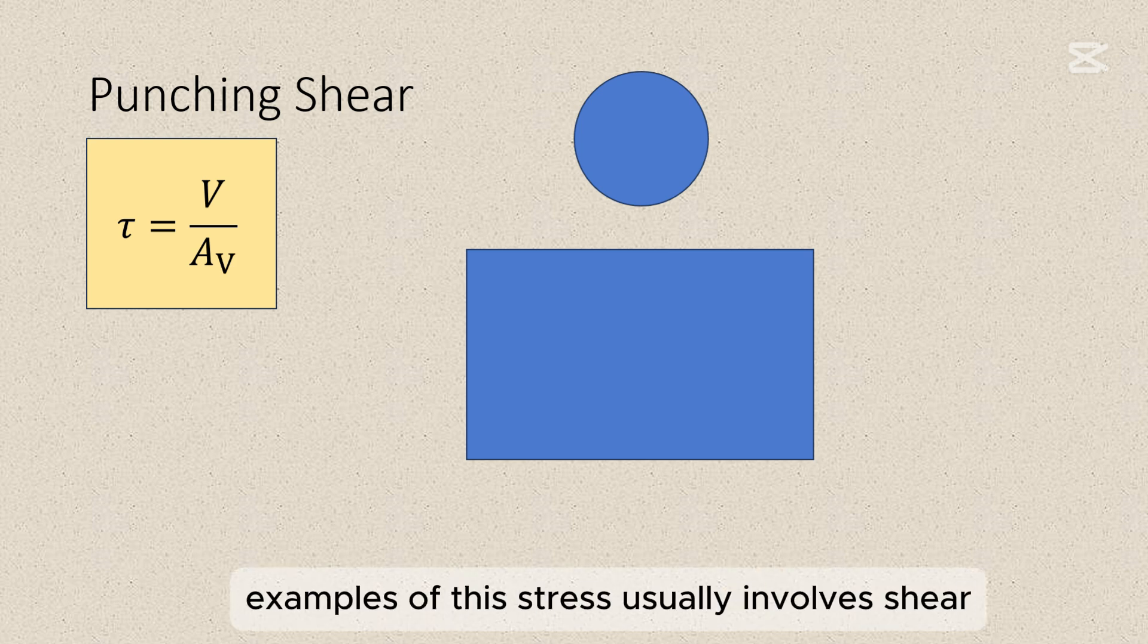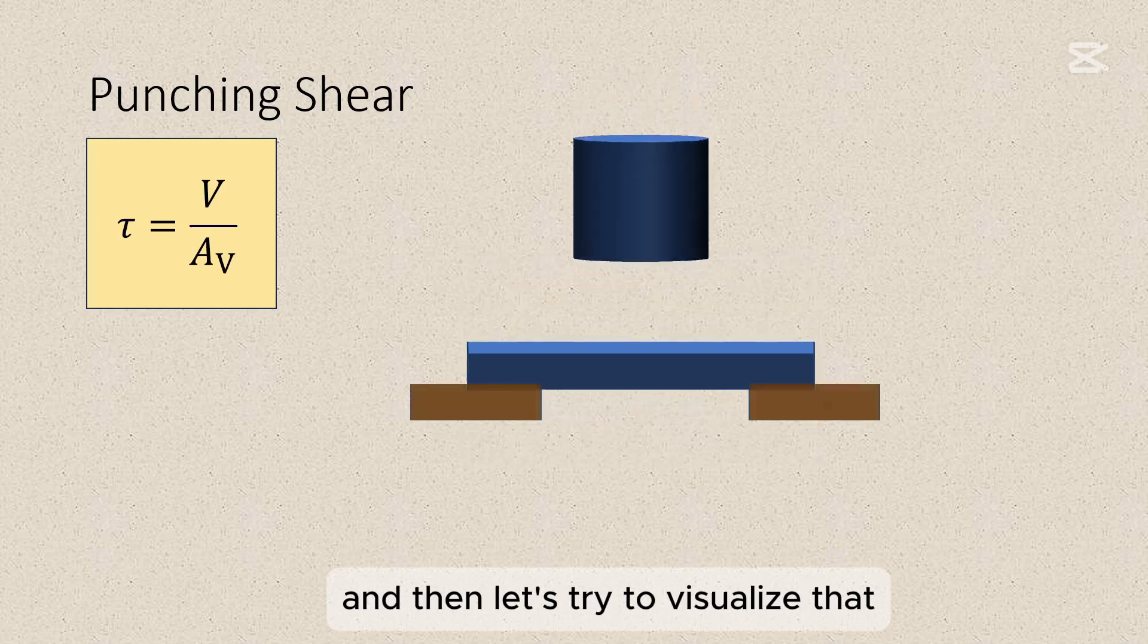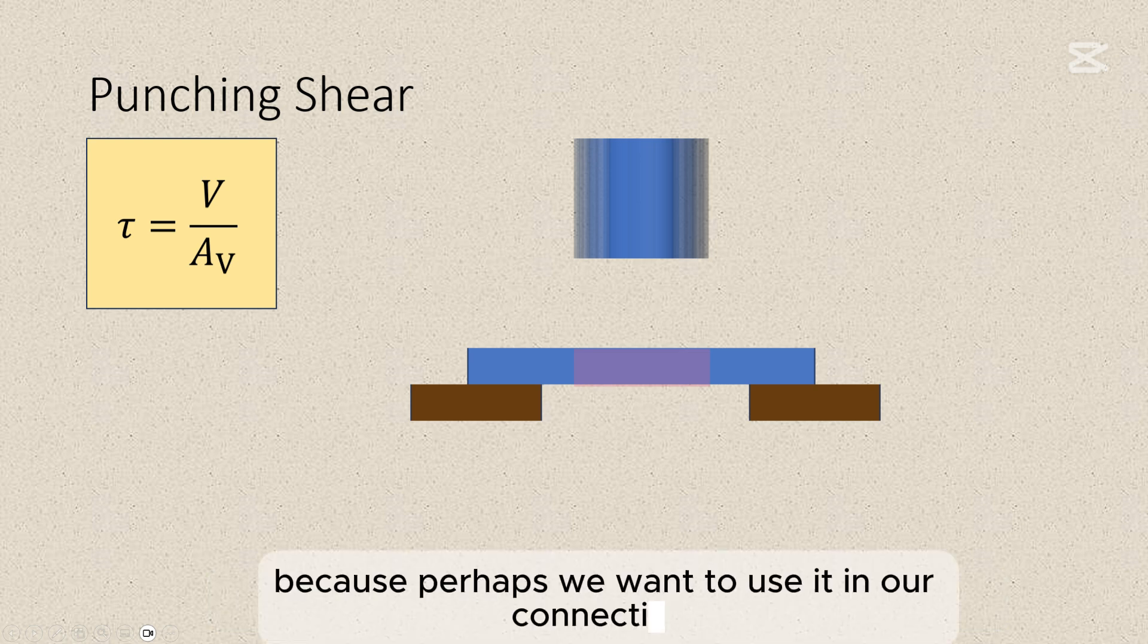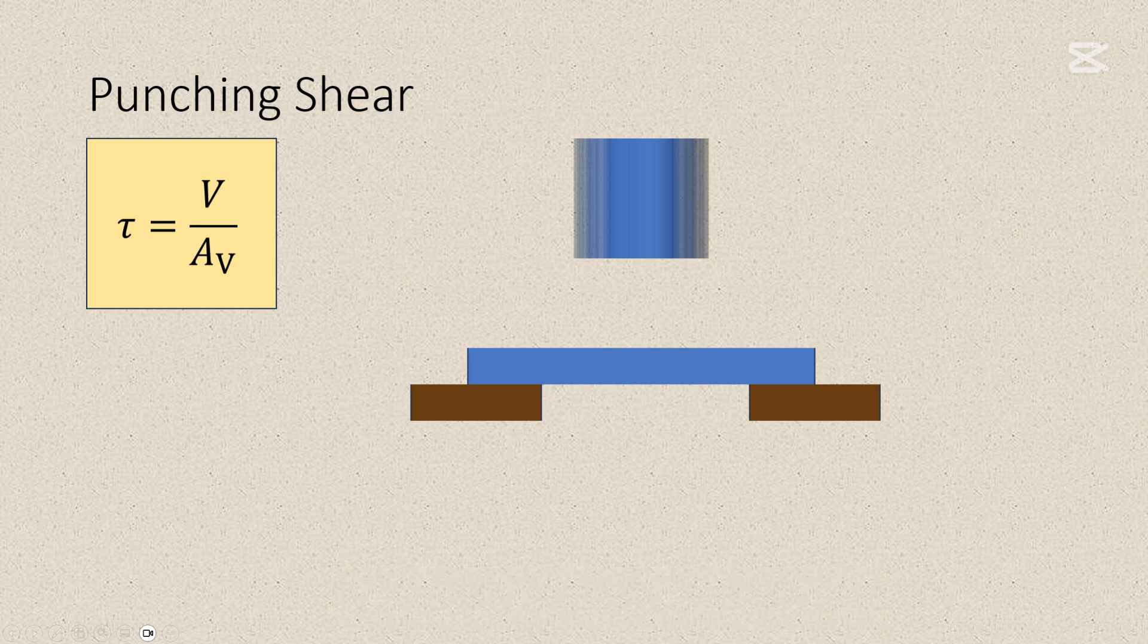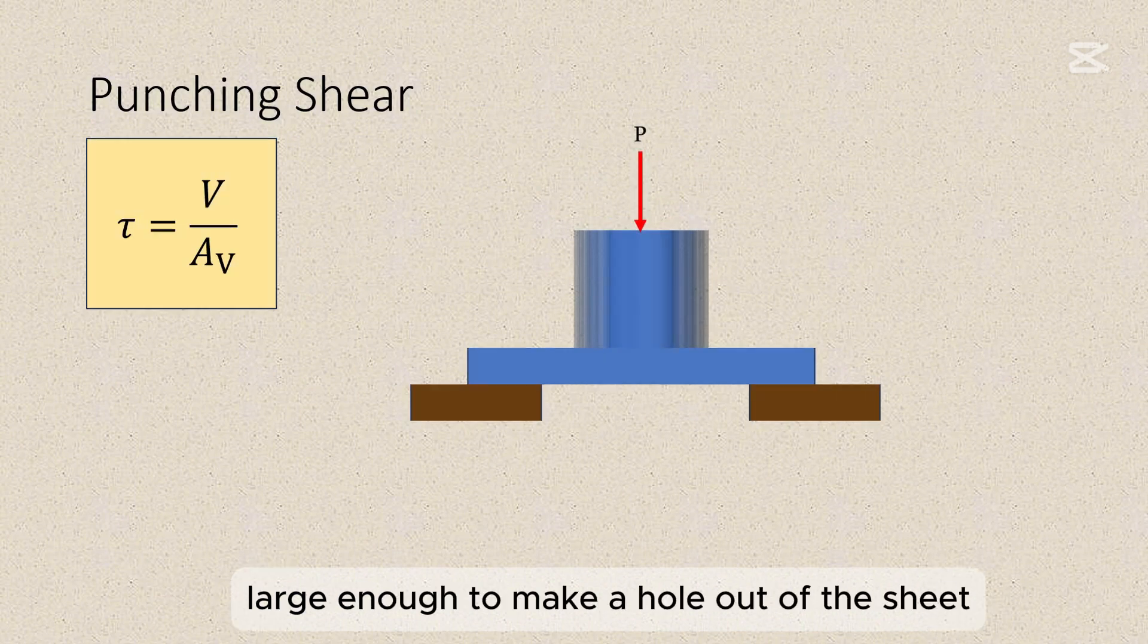Now in mechanics, examples of this stress usually involves shear in the metal sheet produced by a punch or simply a puncher. Now let's say this is the top view of our punch and then this is the top view of our metal sheet. And then let's try to visualize that. We want to make a hole around this metal sheet because perhaps we want to use it in our connections. Now let's see the punch in action. First, let's place the punch against the plate. Notice that if you apply a vertical force large enough to make a hole out of the sheet, it will look like this.